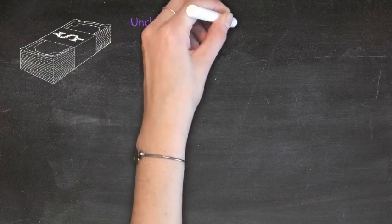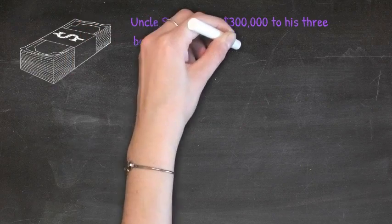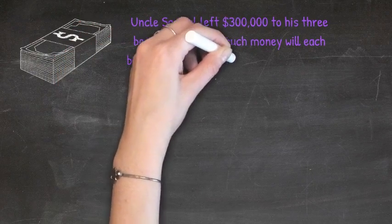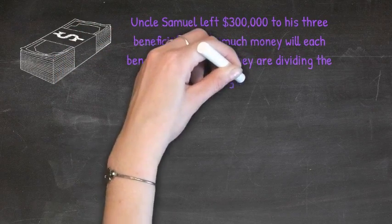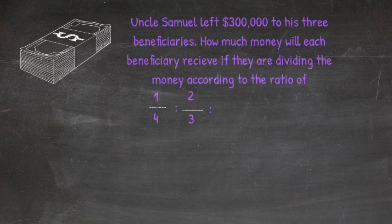Uncle Samuel left $300,000 to his three beneficiaries. How much money will each beneficiary receive if they are dividing the money according to the ratio of one-quarter to two-thirds to one-twelfth?